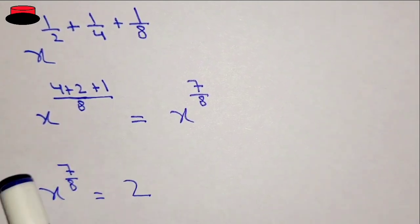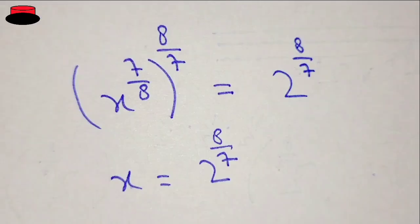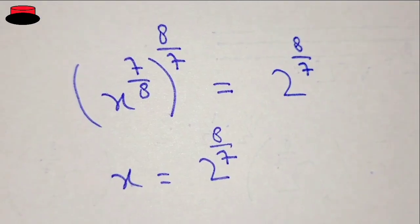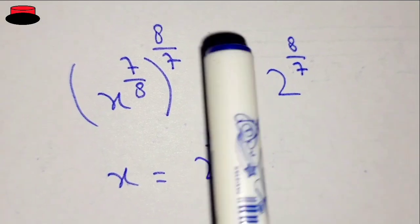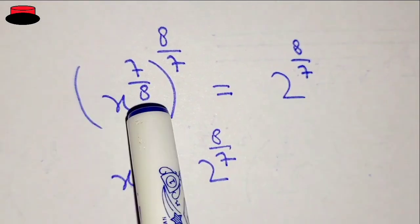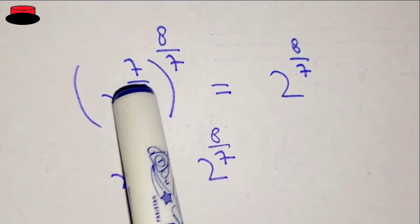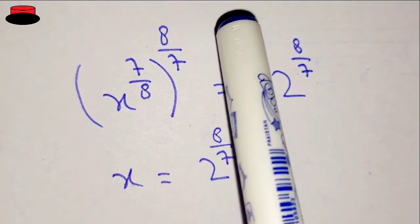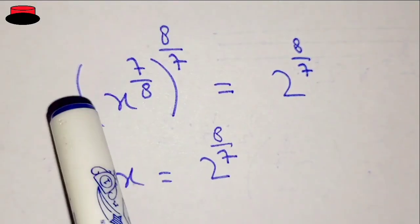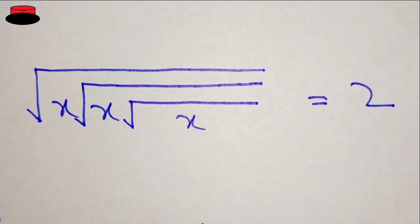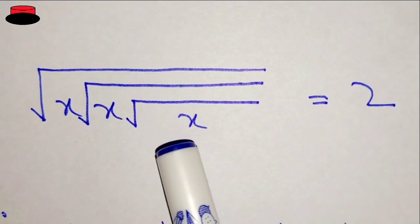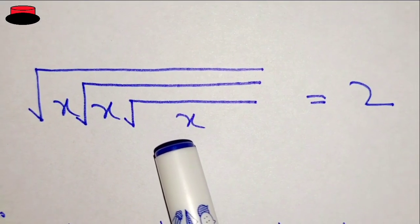This is the new format of the question. Now putting power eight over seven on both sides — in this case 8 and 7 will be cancelled. Now let's substitute the value of x in this question and see what happens.